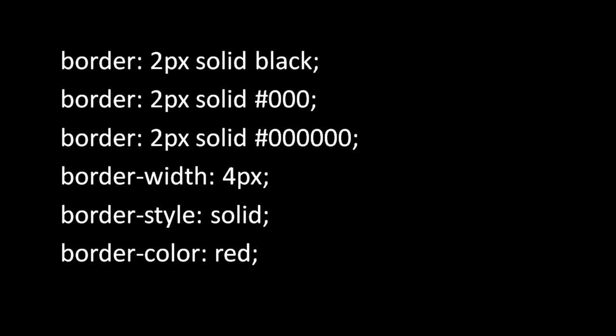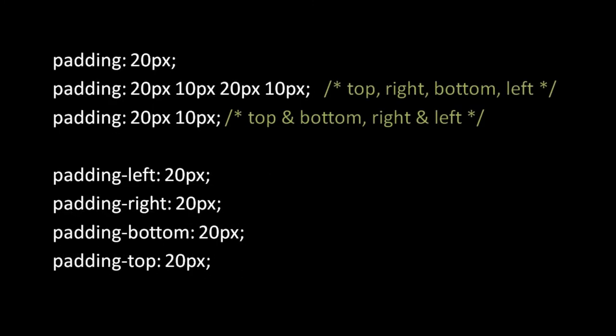Additionally, you can specify border properties independently using three separate properties: border-width, border-style, and border-color. This is convenient because, for example, imagine you've applied a border of 2px solid black to a bunch of elements by some CSS rule, but then there's just one element where you just want to change the color.